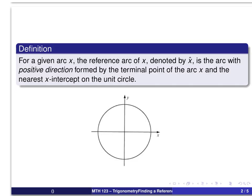Here's the definition, and when you read this type of definition, try to pay attention to the important concepts that are introduced. In particular, this definition introduces some notation: the reference arc is going to be denoted by x-hat. This arc is going to be in a positive direction, meaning we measure it in a counterclockwise direction, and the arc is formed by the terminal point of our arc x and the nearest x-intercept on the unit circle.